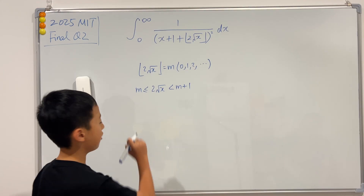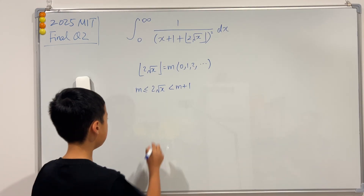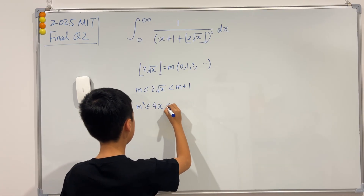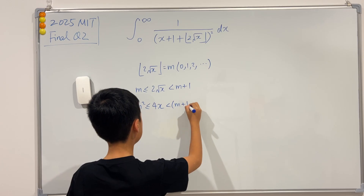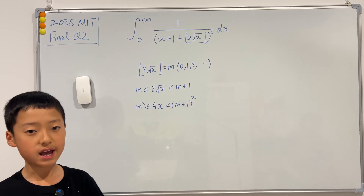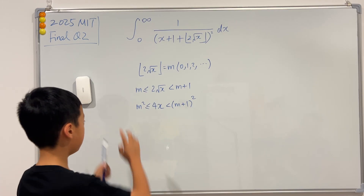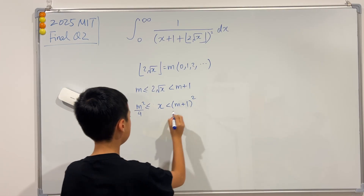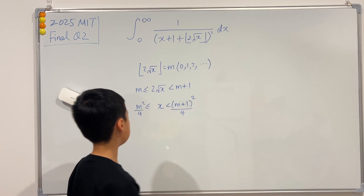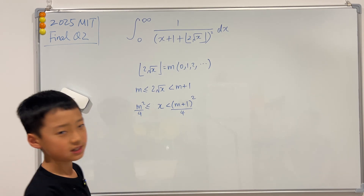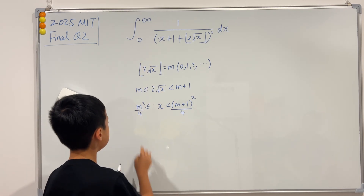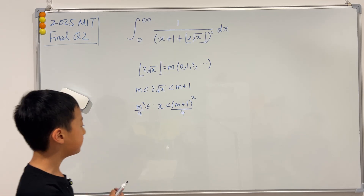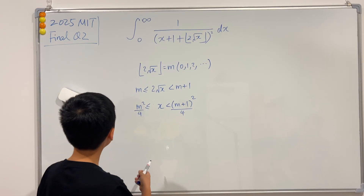If we square both sides, we get 4x is greater than or equal to m² and less than (m+1)². Dividing all sides by 4, we obtain the interval for x: from m²/4 up to (m+1)²/4. But we can't just replace the integration bounds with this directly, because this is only a very small interval compared to the full interval from 0 to infinity.